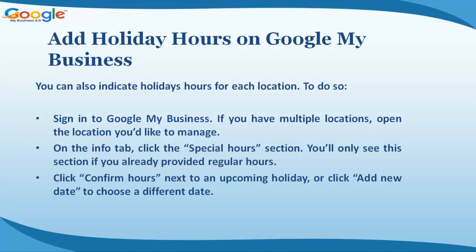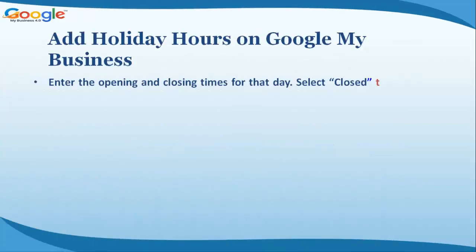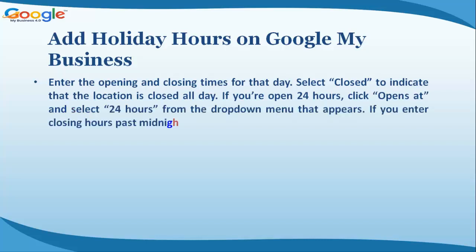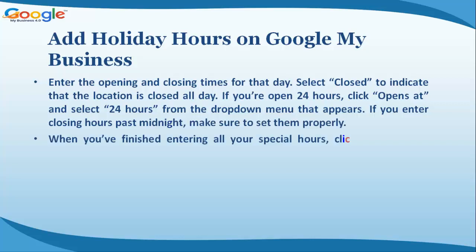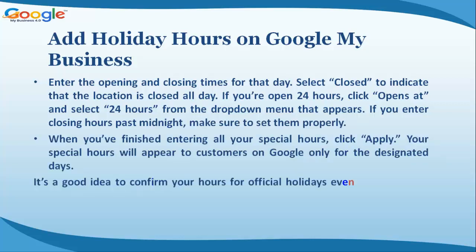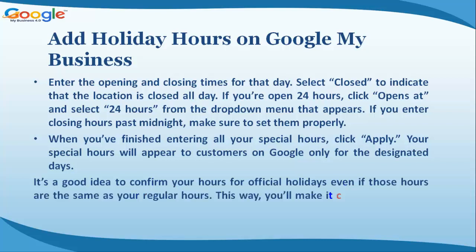Click 'Confirm Hours' next to an upcoming holiday, or click 'Add New Date' to choose a different date. Enter the opening and closing times for that day. Select 'Closed' to indicate that the location is closed all day. If you're open 24 hours, click 'Opens At' and select '24 Hours' from the dropdown menu. If you enter closing hours past midnight, make sure to set them properly.